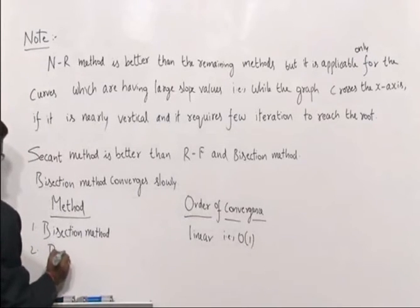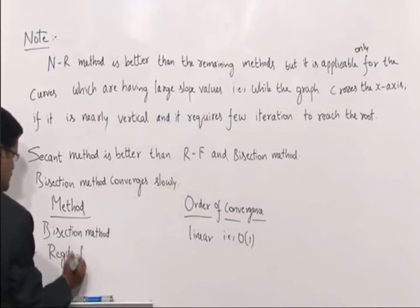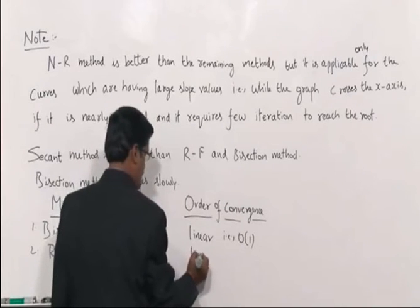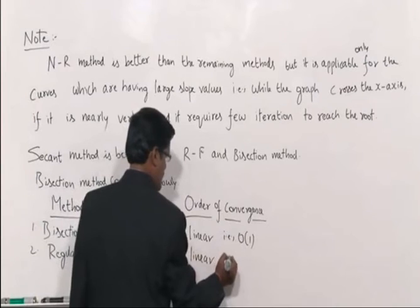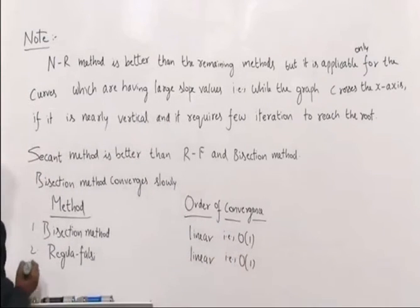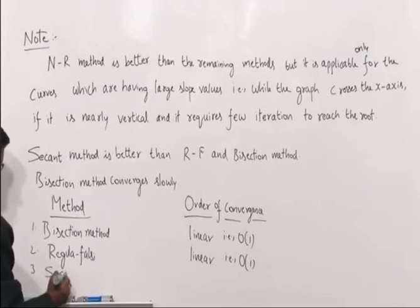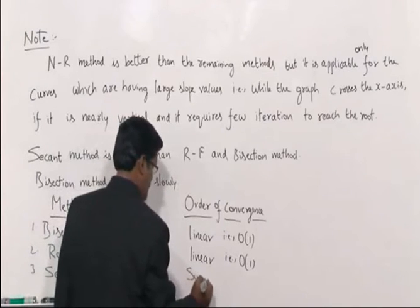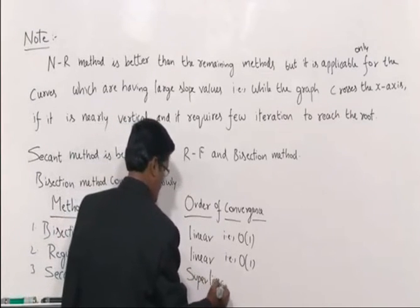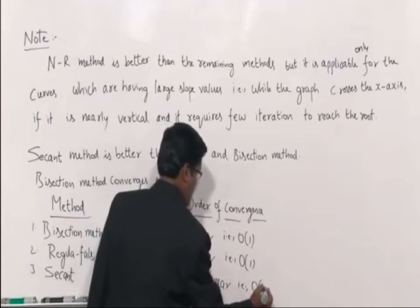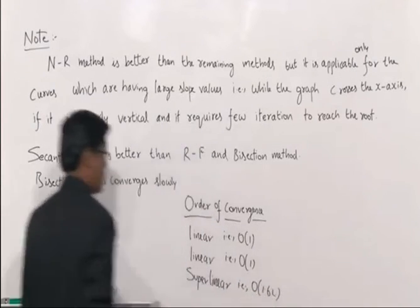Two: Regula Falsi method — this is also linear, that is order 1 in O notation. Three: secant method — super linear, that is more than 1, approximately order 1.62.